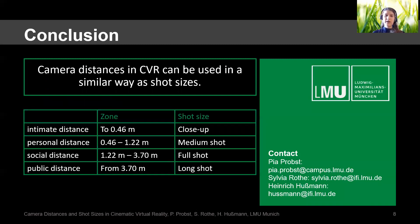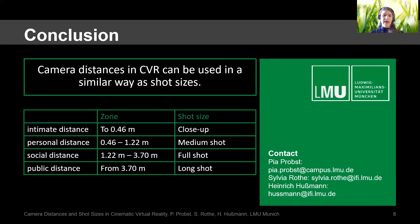In conclusion, we can say that camera distances in CVR can be used in a similar way as shot sizes, because you can use them to convey emotional information. For example, the intimate distance can be used similarly to a close-up, and the personal distance can be used similarly to a medium shot, and so on. What I found interesting was what one participant said: at the personal distance, he had the feeling he was given a VIP tour and the actor was only talking to him. But at the social distance, he felt he was part of a tourist group.